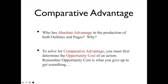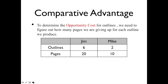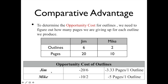To solve for comparative advantage, you have to determine the opportunity costs of the action. In this scenario, if you're making pages, you're not writing outlines, and if you're writing outlines, you're not writing pages. To determine the opportunity costs for outlines, we have to figure out how many pages we're giving up for each outline we produce. Jim gives up 20 pages for every six outlines he produces, or 3.33 pages per outline.